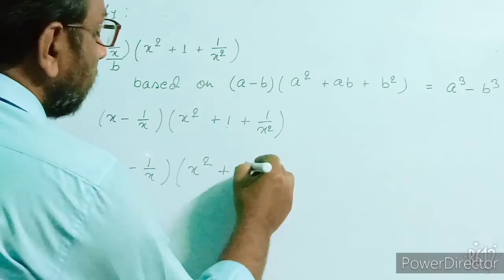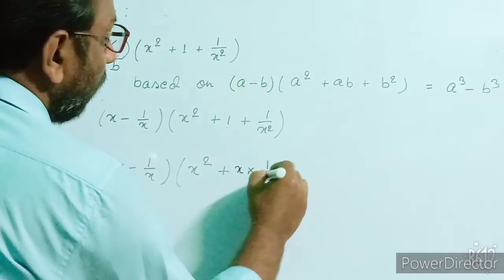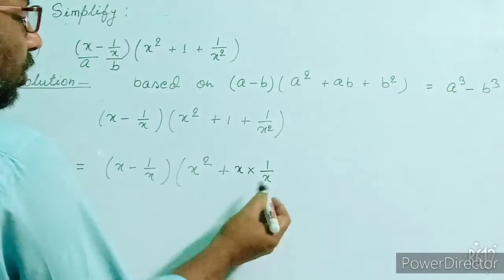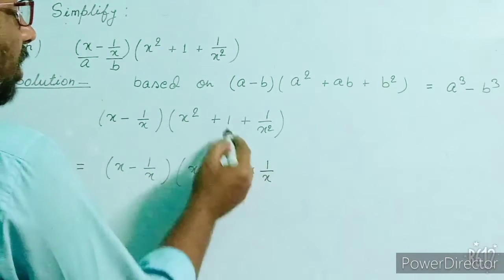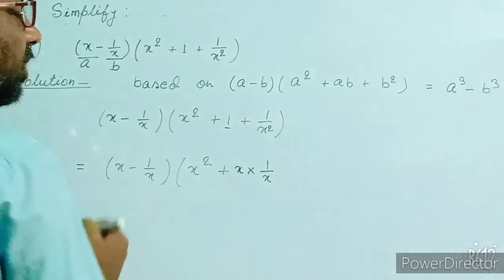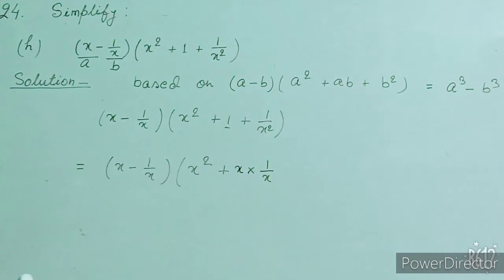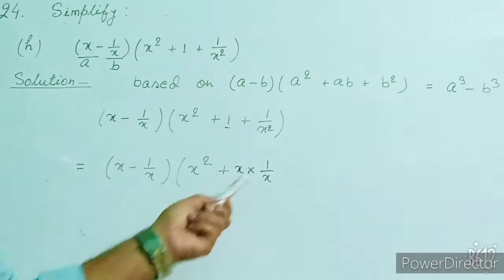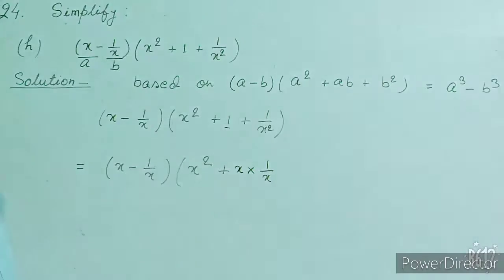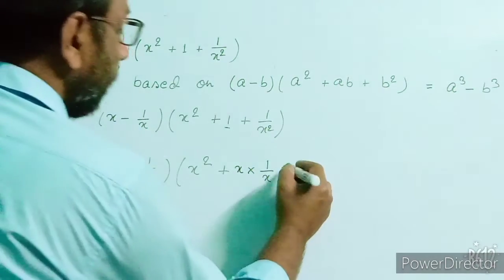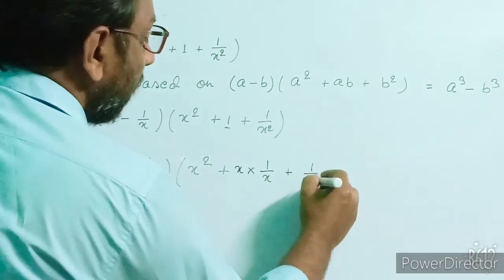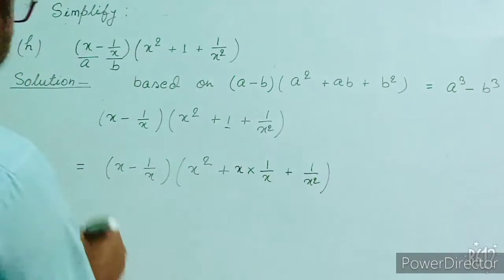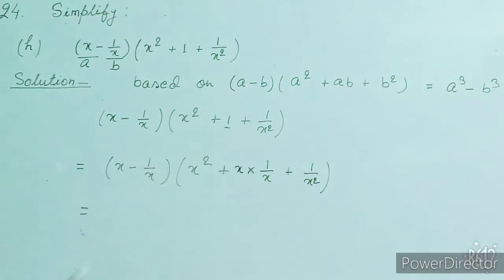A is x and b is 1/x, so x and x will be cancelled and only 1 is left — which is what we are getting in this expression. So we can write this 1 in the form of ab, that is x into 1/x.